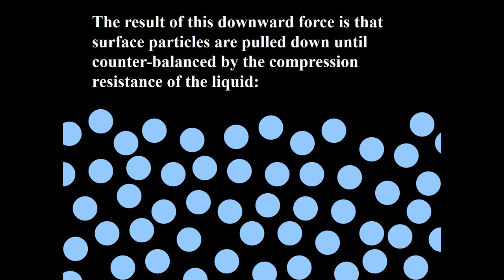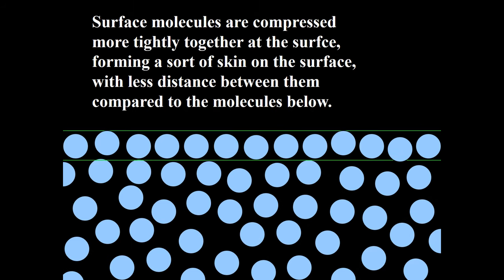The result of this downward force is that surface particles are pulled down until counterbalanced by the compression resistance of the liquid. Surface molecules are compressed more tightly together at the surface, forming a sort of skin on the surface with less distance between them compared to the molecules below them.